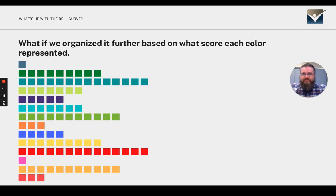But what if we organized it further based on what score each color represented? Now we can see that each colored block has an actual numbered score. That makes it a little bit easier to see how the data compares to each other.